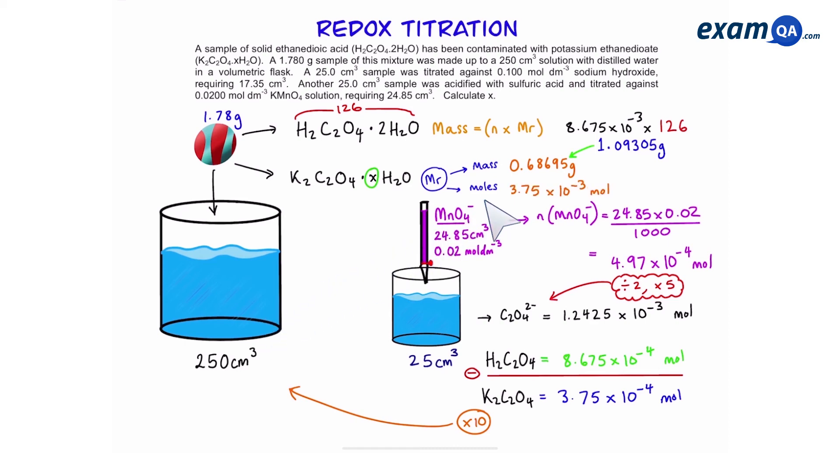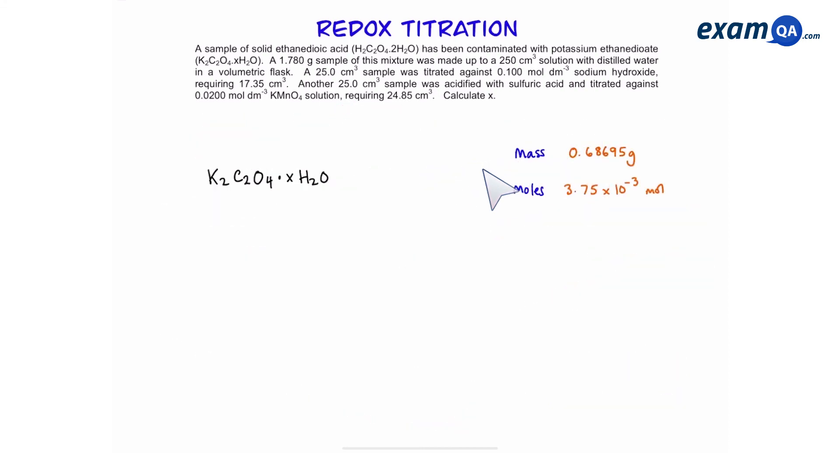So now that we know the moles and mass of potassium ethane dioate let's work out the value of x. So first of all we're going to work out the relative formula mass. We're going to divide mass by moles and that should give us 183. Then we're going to subtract the value of potassium ethane dioate and that gives us a value of 17.